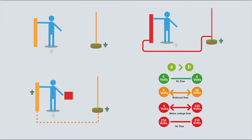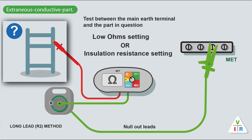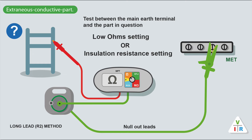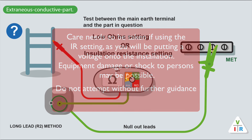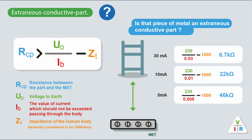So to test and make sure that something is not an extraneous conductive part, we need to get our multi-function tester and test between that part and the main earthing terminal. These can be quite a long distance apart - the bundle lead, or long lead, R2 lead, whatever you call it, is useful for this. Don't forget to null the leads out. We connect one end to the MET and then with the low ohms setting we test the piece of metal to see if it's extraneous or not. You can use the low ohms setting or you could use the insulation resistance setting, only if your meter doesn't have the resolution that you need. Most modern meters now have a normal resolution - mine has a resolution of 99.9 kilo-ohms. A few years back you didn't have that, so you had to use the insulation resistance setting. So we test between the MET and the piece of metal and we get a reading.